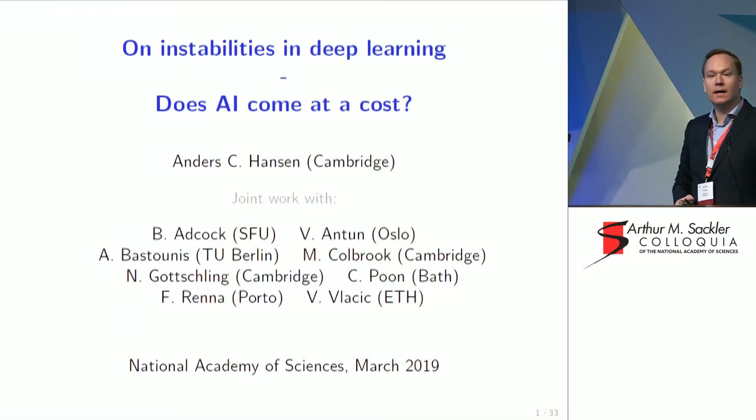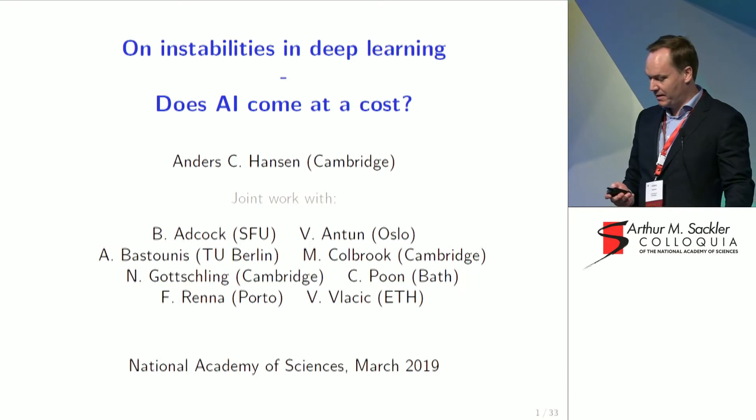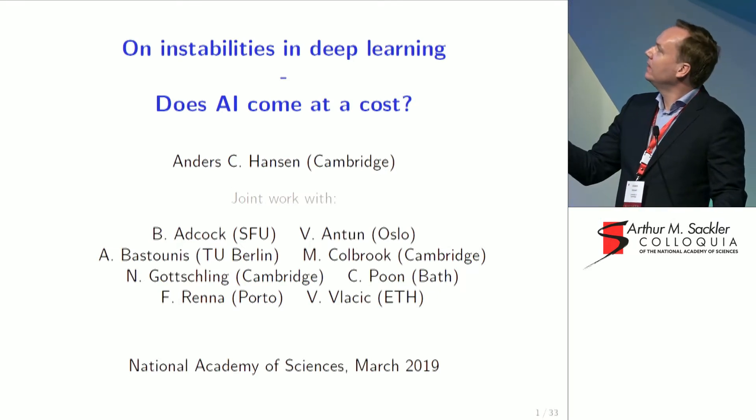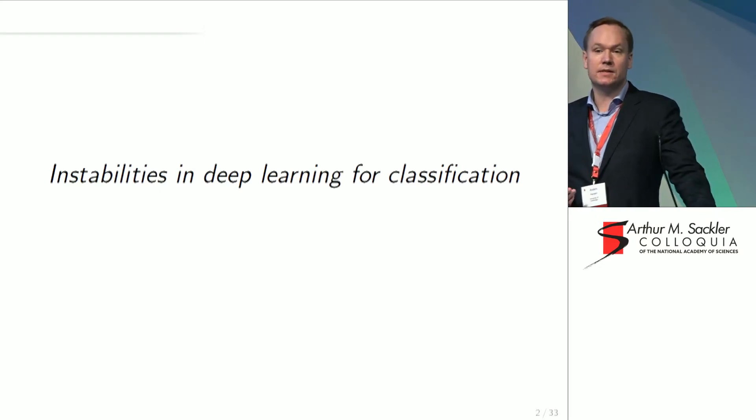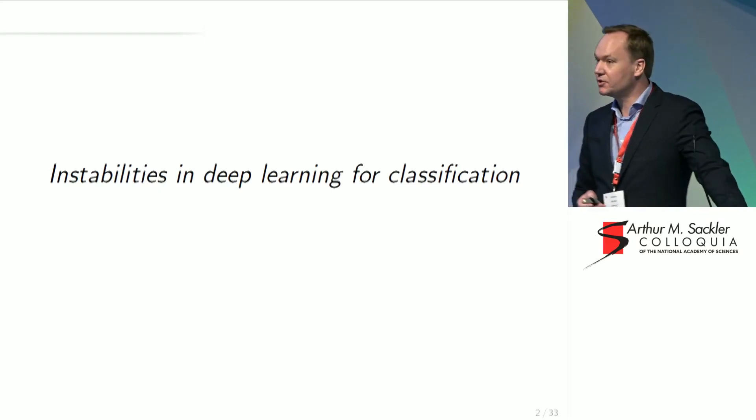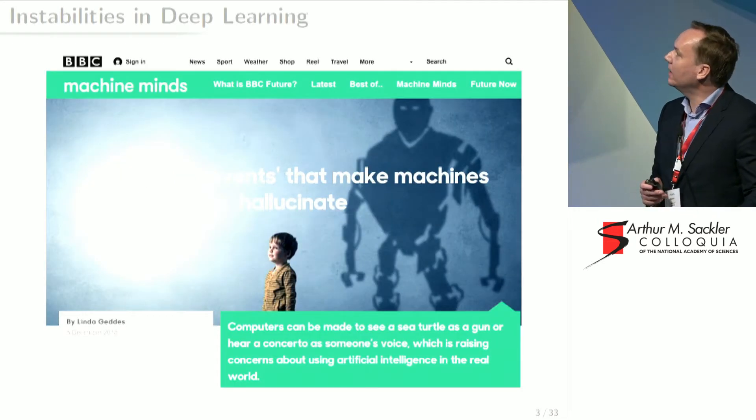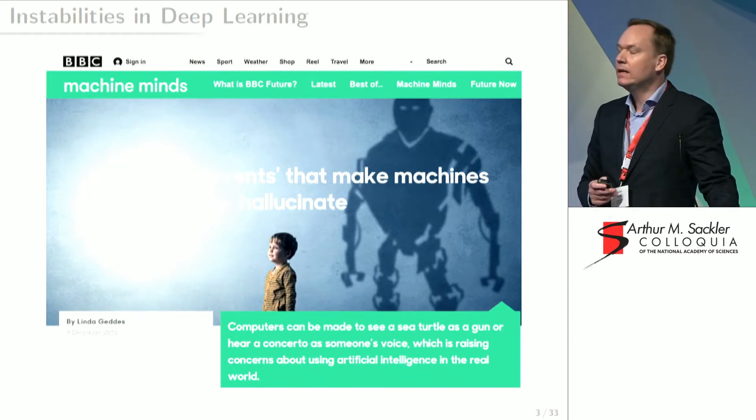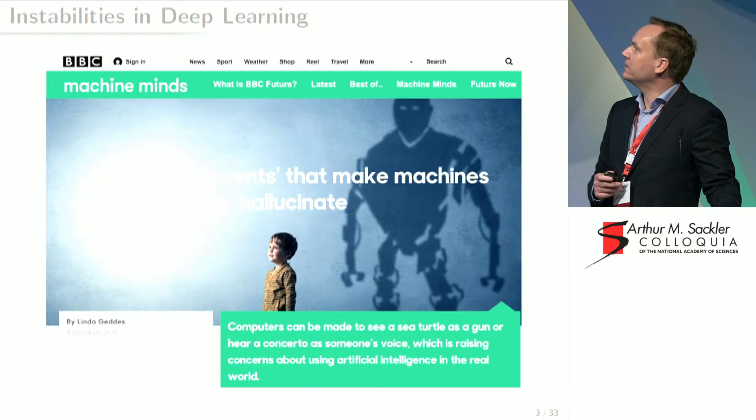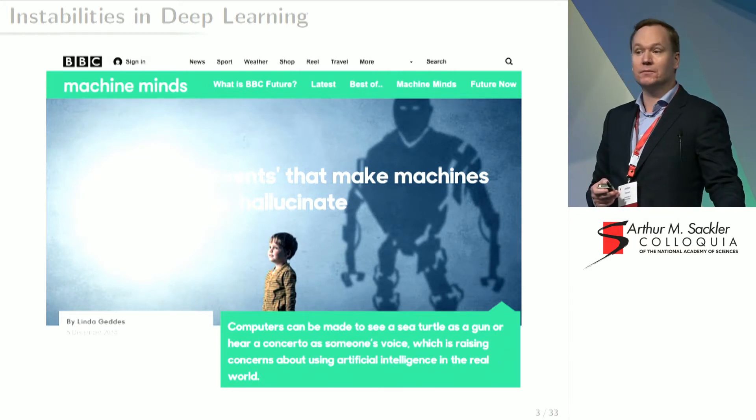So I'll be talking about instabilities in deep learning, and I would like to ask the question, does AI, as we know it, come at a cost? I'm going to start by talking about instabilities in deep learning for classification. And to illustrate the problem, I would like to show you an article from the BBC that was published last December. The fact that we see this now in the press suggests that the concern about these instabilities has become completely mainstream.